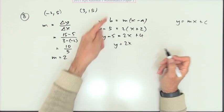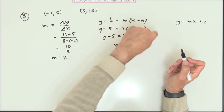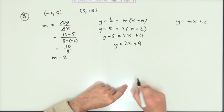So y equals 2x. Bring the 5 across. Minus 5 across is plus 5. 2x plus 9.